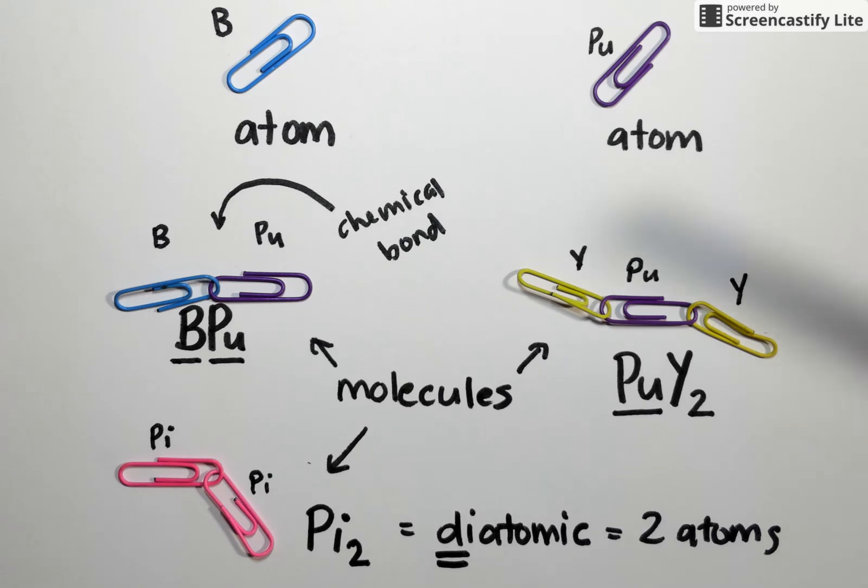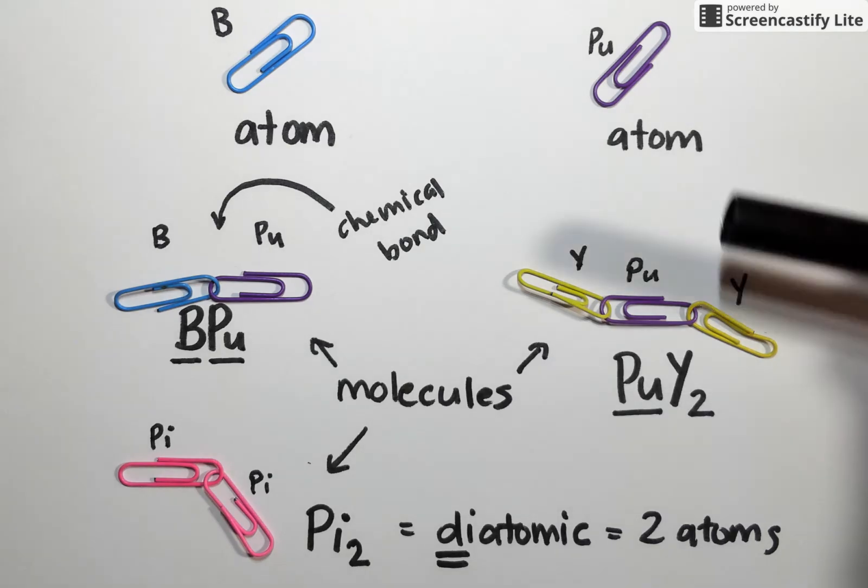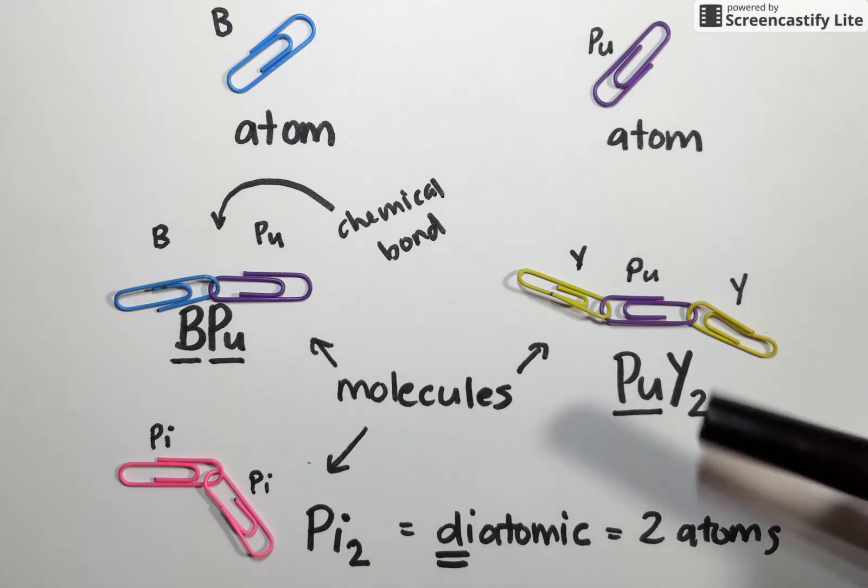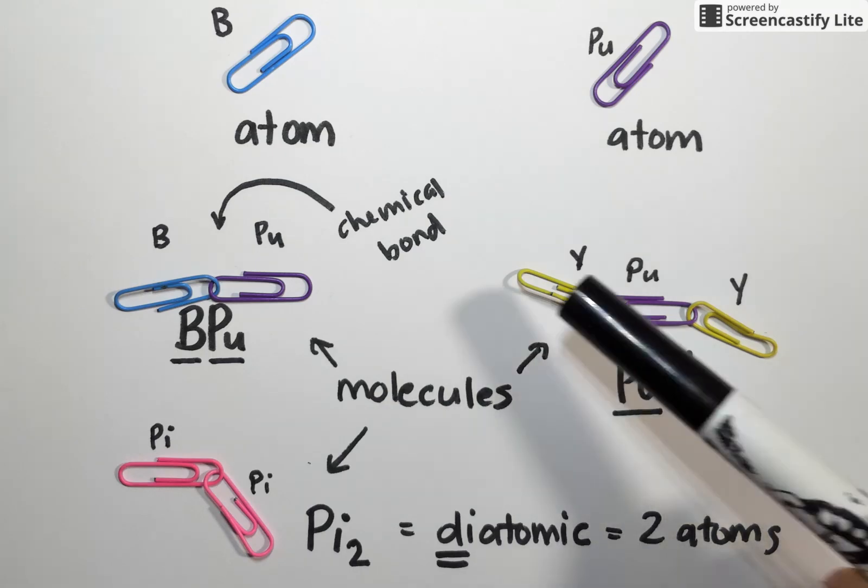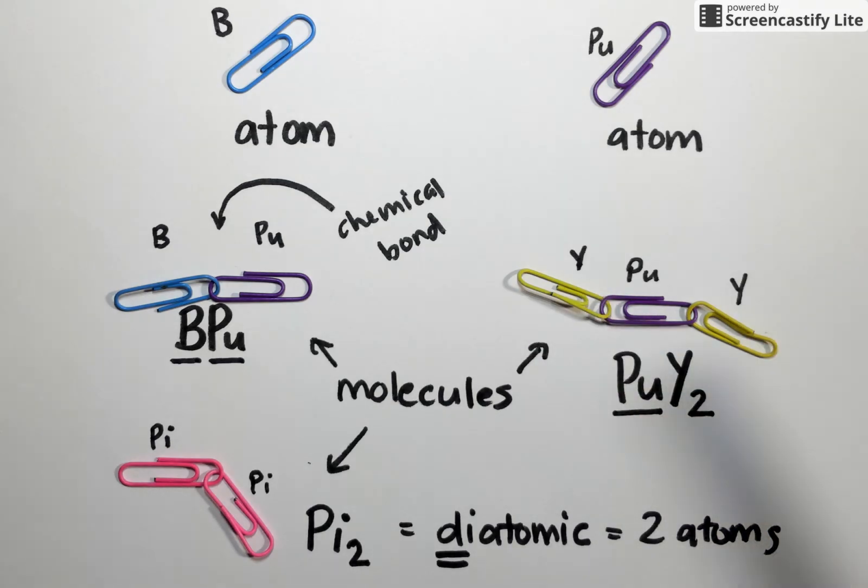So keep in mind, when you're counting atoms and when you're looking at molecules, you can use the chemical formulas to represent physical attachments of atoms. We can use this term diatomic to describe molecules that are formed with two atoms. And we can use subscripts to help us distinguish how many of each atom are contained within one molecule.